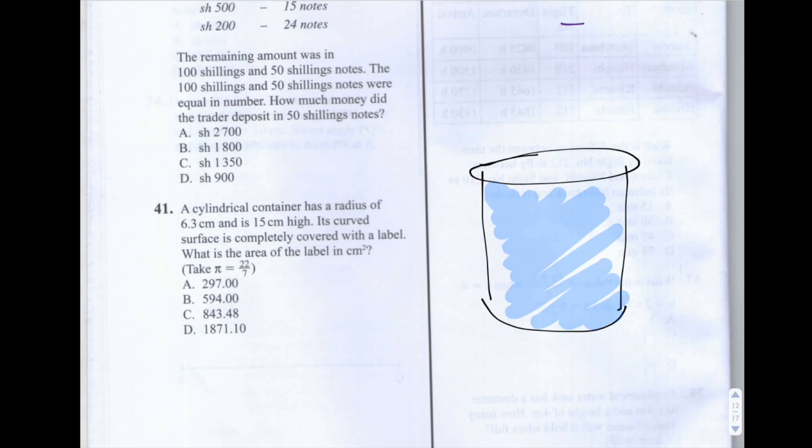This is question number 41 of the 2013 KCPE Maths paper. The question says a cylindrical container has a radius of 6.3cm and is 15cm high. Its curved surface is completely covered with a label.